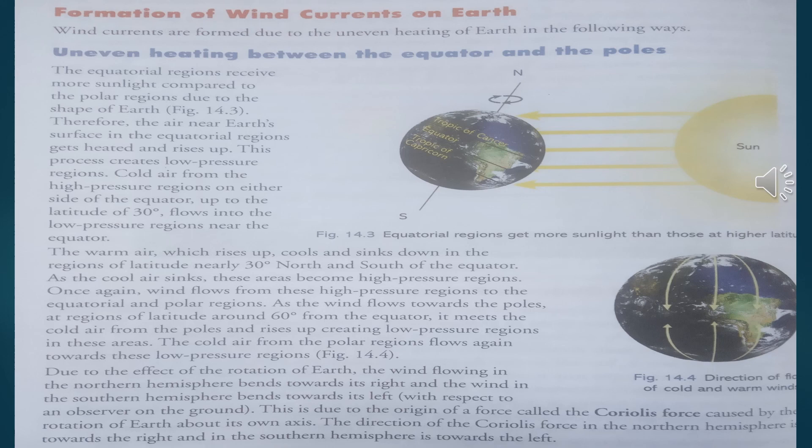So from this we understand that air currents or wind currents form because of pressure differences, and these pressure differences are created because of the uneven heating of the Earth by sunlight.